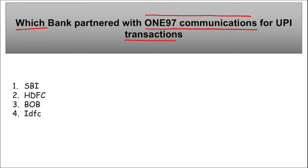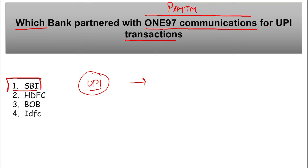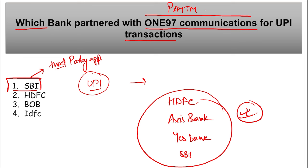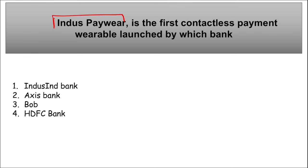State Bank of India (SBI) partnered with One97 Communications — the parent company of Paytm — to settle UPI transactions upon acquiring the Third Party Application Provider (TPAP) license. The other three banks with TPAP licenses are HDFC Bank, Axis Bank, and Yes Bank.